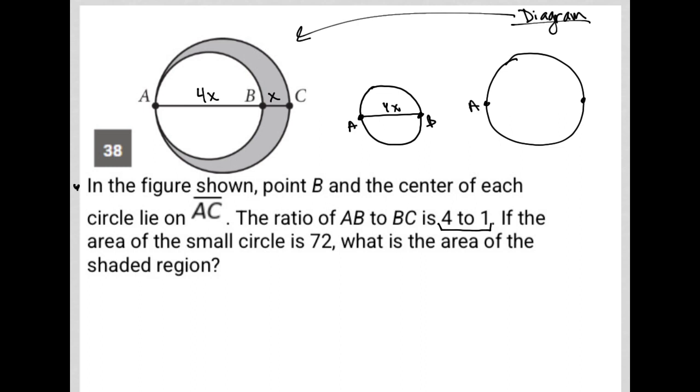This is kind of what we miss when we see the original shape, because this diameter here would be 5X, right? Because it's like 4X plus X. So that's 5X. Now, the question just told me the area is 72 here. So A equals 72.